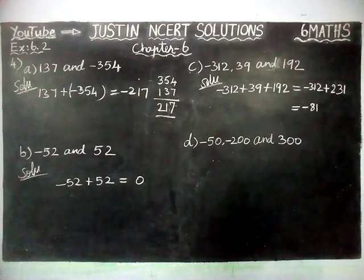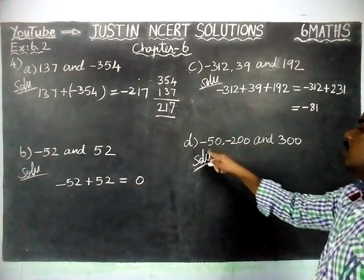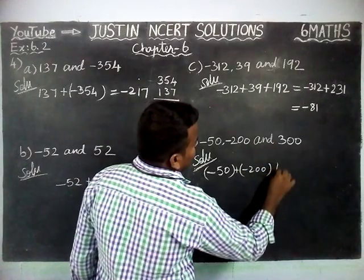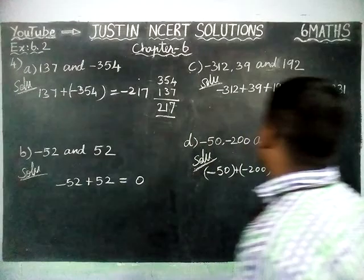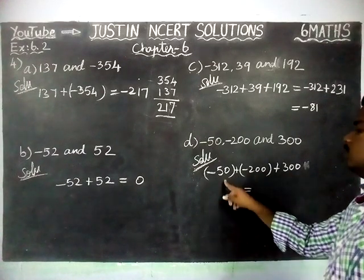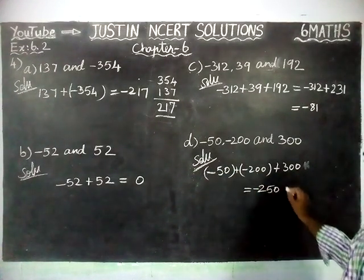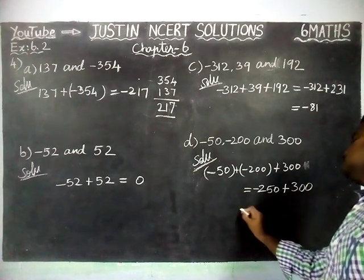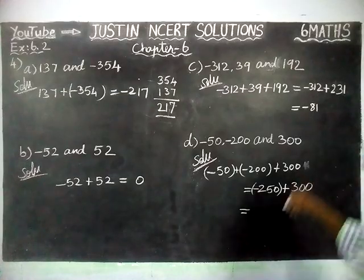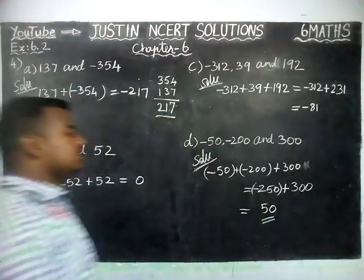And then last part D: minus 50, minus 200 and 300 — 2 negative numbers, 1 positive number. Minus 50 plus minus 200, plus 1 positive number that is 300. Firstly we are going to add the 2 negative numbers: 200 plus 50 is equal to 250, and both have minus sign so minus 250. Then plus positive number 300. Now signs are different, we have to find the difference. Difference between 300 and 250 is 50, and greatest number is 300 with plus sign, so plus 50 is the correct answer for part D.